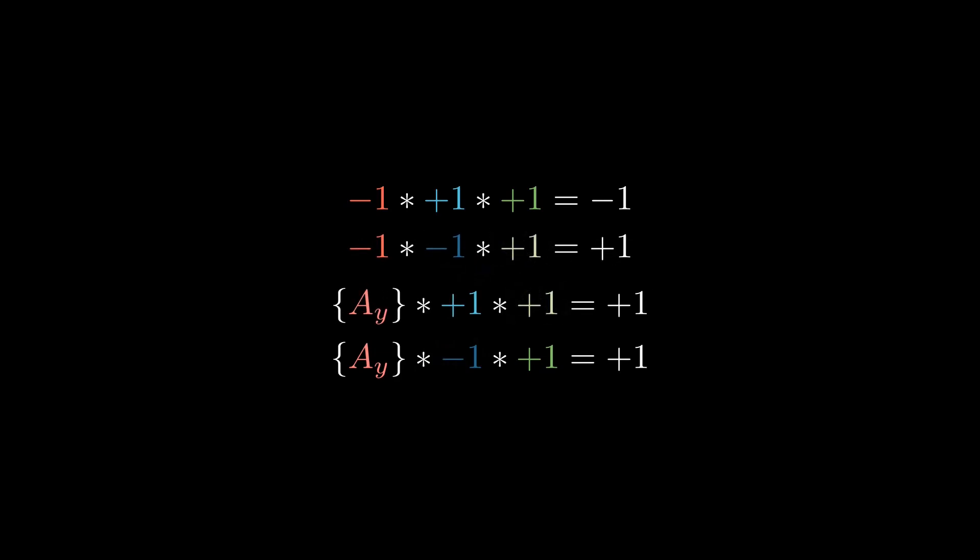And so now we can see that equation three says that AY has to be positive one and equation four says that AY has to be negative one. Oh, shit.